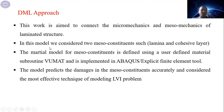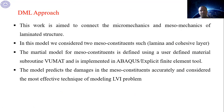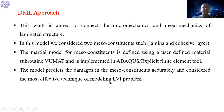This work aims to connect the mechanical, micromechanics, and mesomechanics of the laminate structure. The model considers two mesoconstitutents: the lamina and the interface. The material model for each mesoconstitutent is defined using a user-defined material subroutine VUMAT and is implemented in Abaqus Explicit finite element tool. The model predicts damage in mesoconstitutent activity and is considered the most effective technique for modeling low-velocity impact problems.